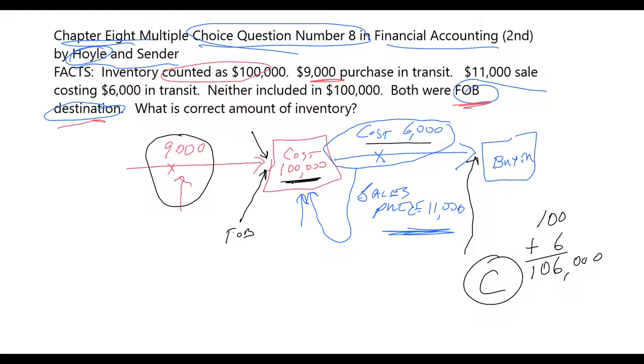Did you get that? If you work this question before we get started, did you get $106,000? Did you know how the $9,000 was to be handled? And did you know how the $6,000 was to be handled?